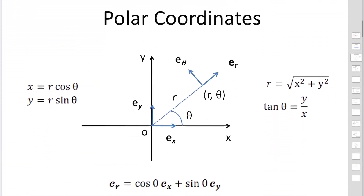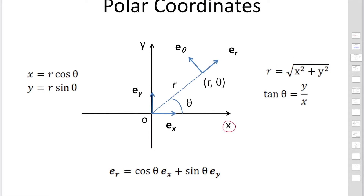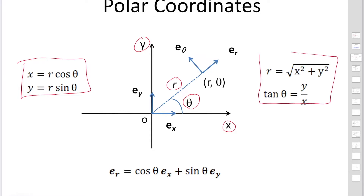We would like to express angular momentum in polar coordinates. In Cartesian coordinates we use x and y, while in polar coordinates we use r and theta, with x equal to r cosine theta and y equal to r sine theta. Conversely, r equals the square root of x squared plus y squared, and tan theta equals y over x, so you can easily convert between the two systems.